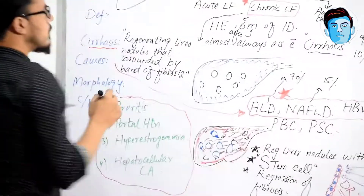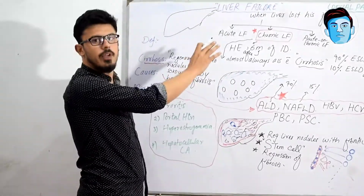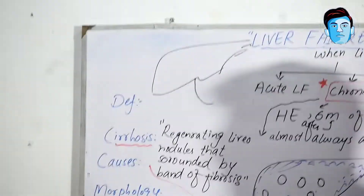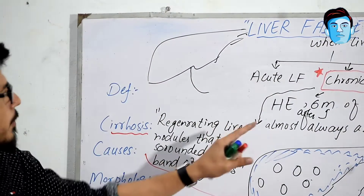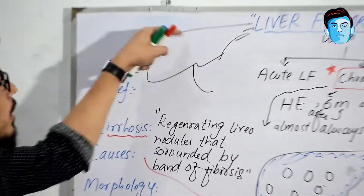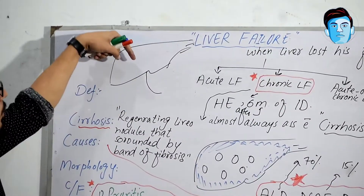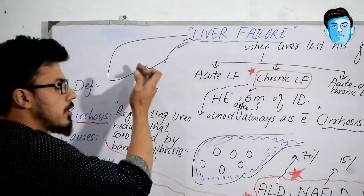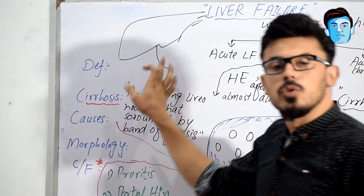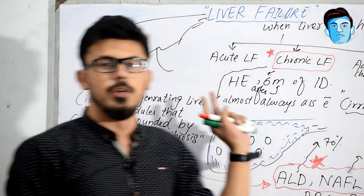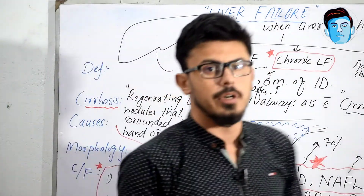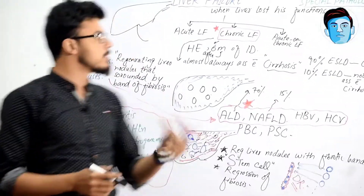The second feature is portal hypertension. All GIT blood supply through the hepatic portal vein comes into the liver. If there is chronic infection continuing in the liver, all the blood coming from the GIT will not go toward the liver, so blood will move in a backward direction, causing increased pressure in the hepatic portal vein. This increased pressure pushes blood and fluids toward the peritoneal cavity, causing ascites — fluid collection in the peritoneal cavity — which is an important complication of cirrhosis.